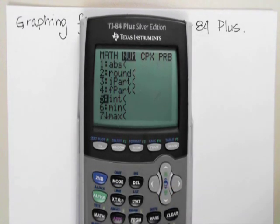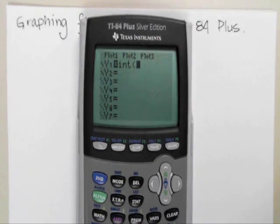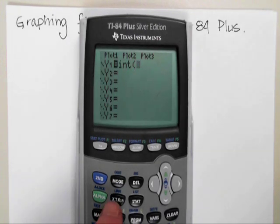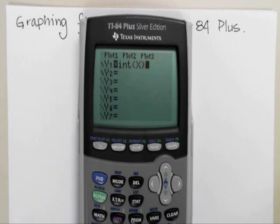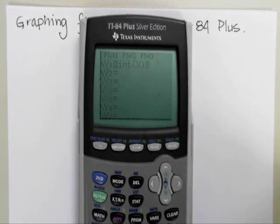If you pick number 5, it says int, so hit enter. We'll put in x, close parentheses. Now let's go ahead and graph it.